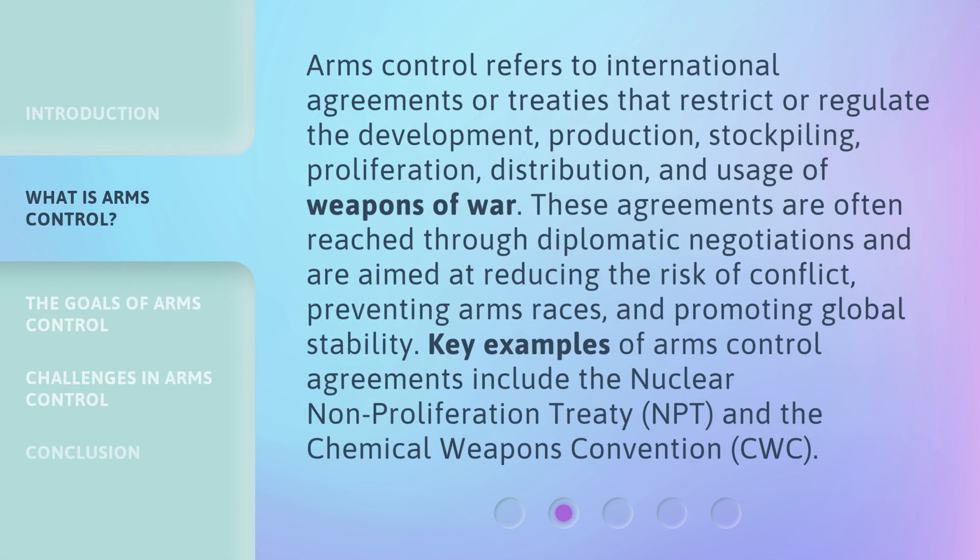Arms control refers to international agreements or treaties that restrict or regulate the development, production, stockpiling, proliferation, distribution, and usage of weapons of war. These agreements are often reached through diplomatic negotiations and are aimed at reducing the risk of conflict, preventing arms races, and promoting global stability. Key examples of arms control agreements include the Nuclear Non-Proliferation Treaty and the Chemical Weapons Convention.